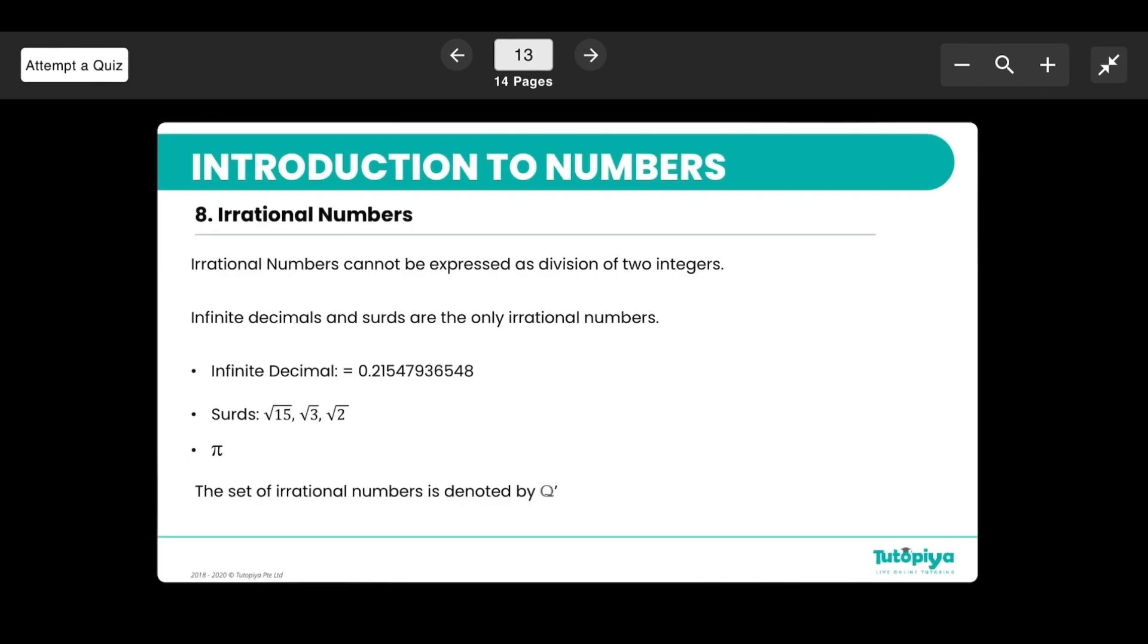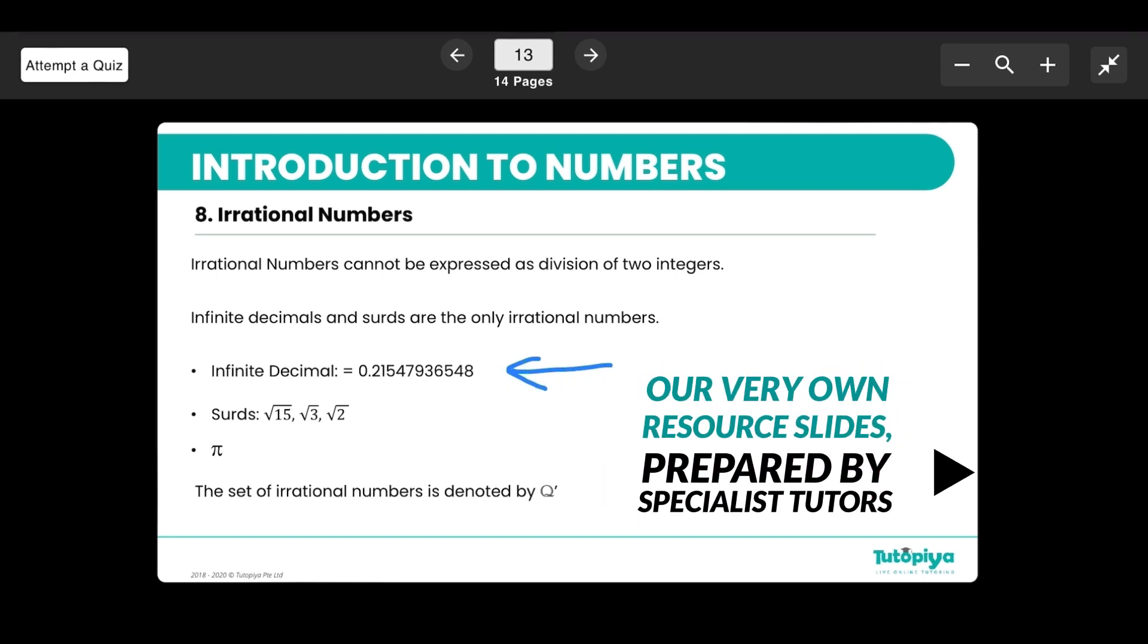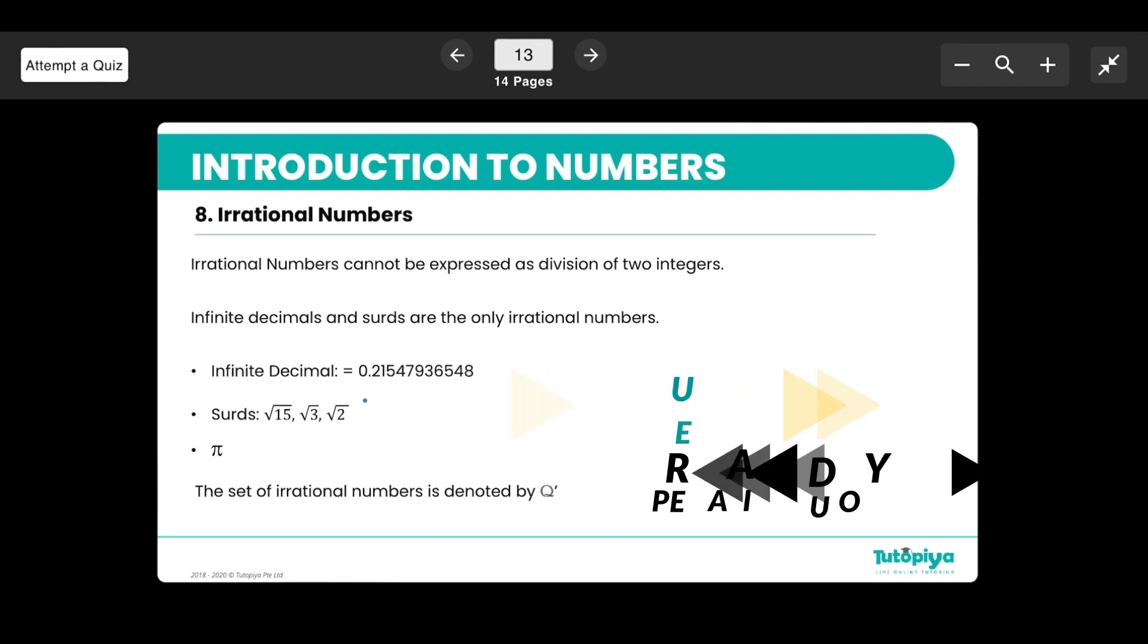And finally moving on to irrational numbers. So irrational numbers are basically everything that is not rational. For example it could be an infinite decimal. So a decimal that doesn't end and goes on forever. And it could be surds. So you can see these are surds which don't involve perfect square numbers. So for example square root 2, square root 3 they would be giving us decimal outputs which are continuous. So hence they are also part of irrational numbers. And of course the most famous one is Mr. Pi, the famous symbol.